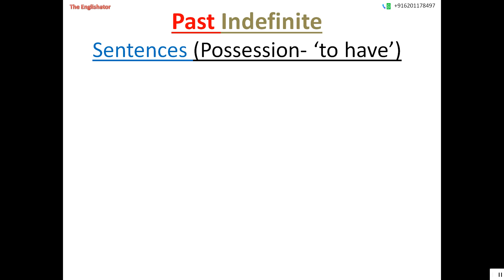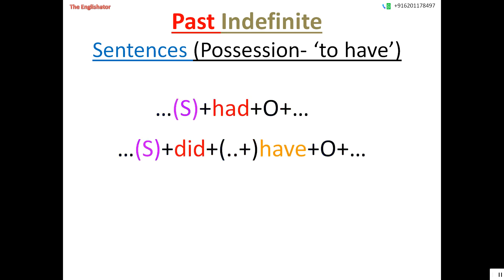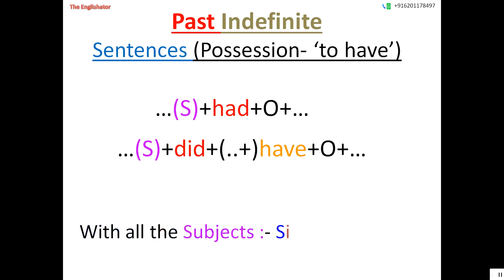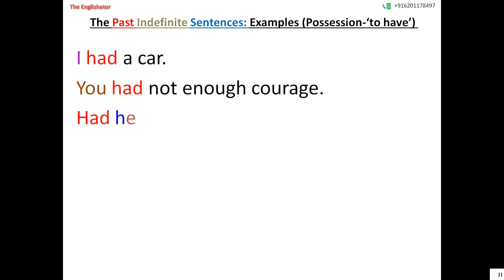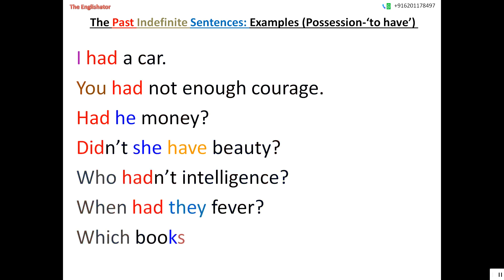Now let us see how to make sentences showing possession or ownership in the past — the use of the verb 'to have' in the past indefinite tense. There are two alternative patterns: either use the V2 form of 'to have,' which is 'had,' or use the V2 form of auxiliary 'to do' ('did') with the V1 form 'have.' Both are applicable to all subjects. Examples: I had a car. You had not enough courage. Had he money? Didn't she have beauty? Who hadn't intelligence? When had the fever? Which books did we not have?